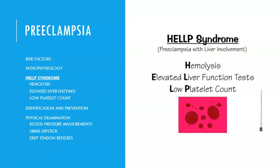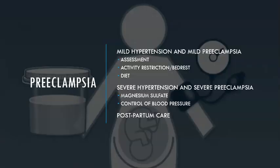Magnesium sulfate is a major drug given for preeclampsia — not primarily for hypertension, but to prevent seizures and prevent progression to eclampsia. As covered in other courses, magnesium calms everything down. It's also used in labor and delivery to stop preterm labor. Page 63 in your ATI book covers magnesium, and you should know it well because it appears frequently in this class.